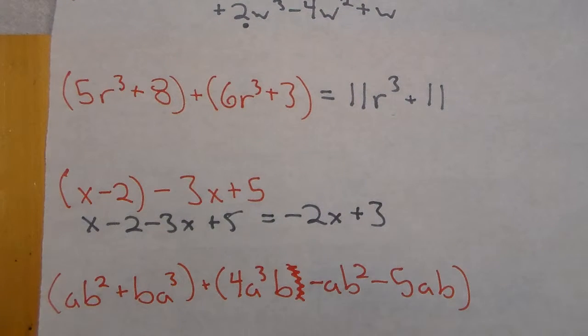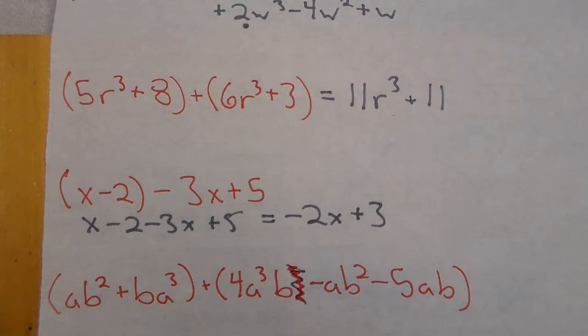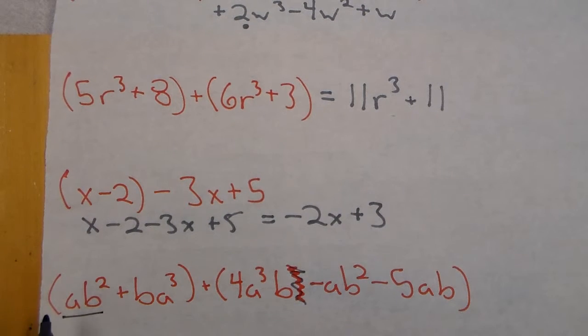Now we get a little bit more variables and we just have to pay attention to what are like terms. So let's go through and just find things that match. So I have a ab² here and I have another ab² there. Now I would normally combine those like terms but that's one and that's negative one. So this is actually zero and they're gone entirely.